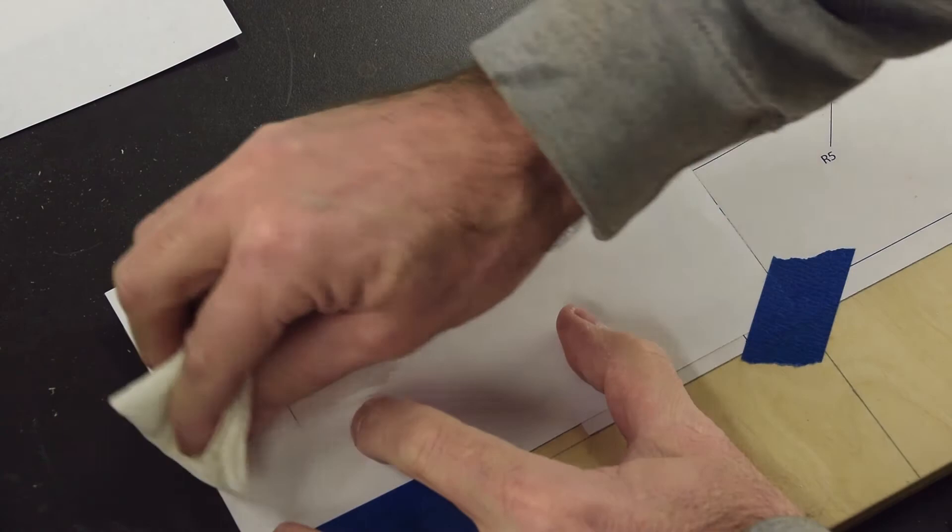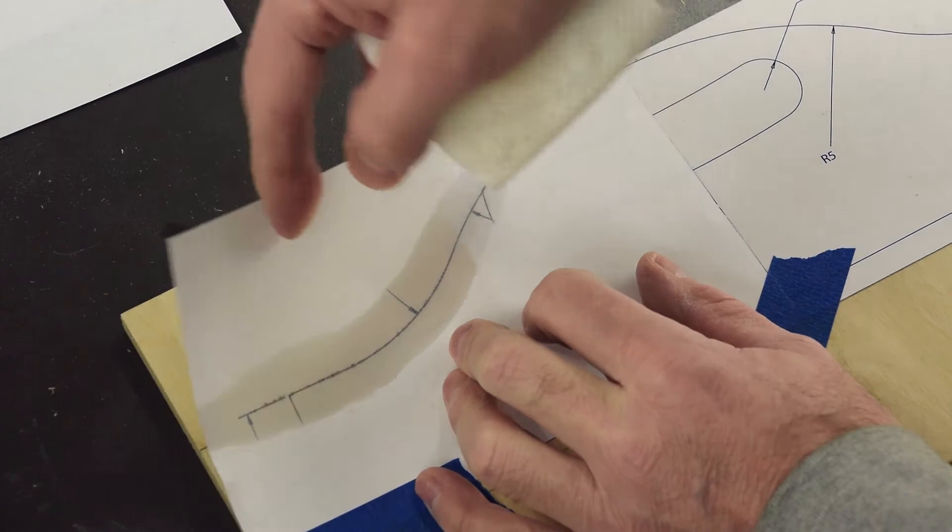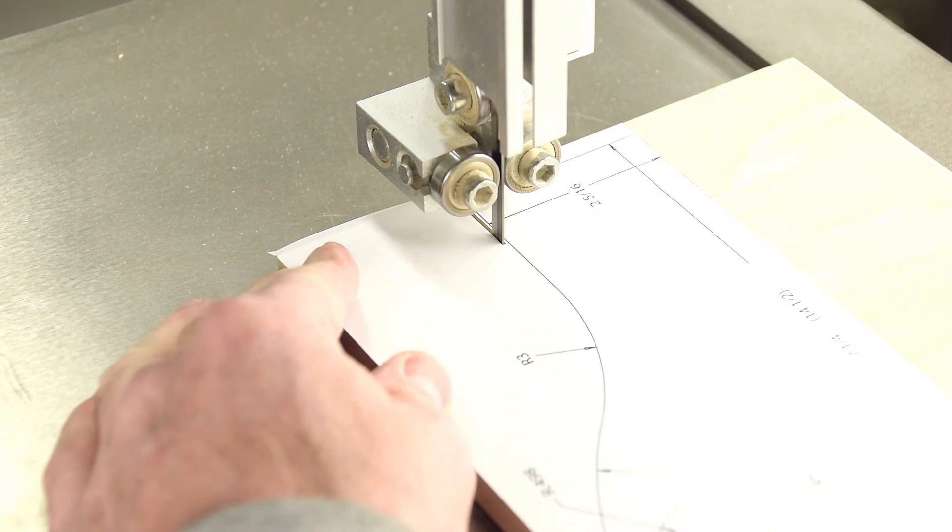Here's a tip. Rub the back side of the paper with a paper towel slightly dampened with a parts cleaner called xylene. You can also use acetone. You can get the xylene at big box stores, and it releases the laser toner from the paper transferring it to the wood.